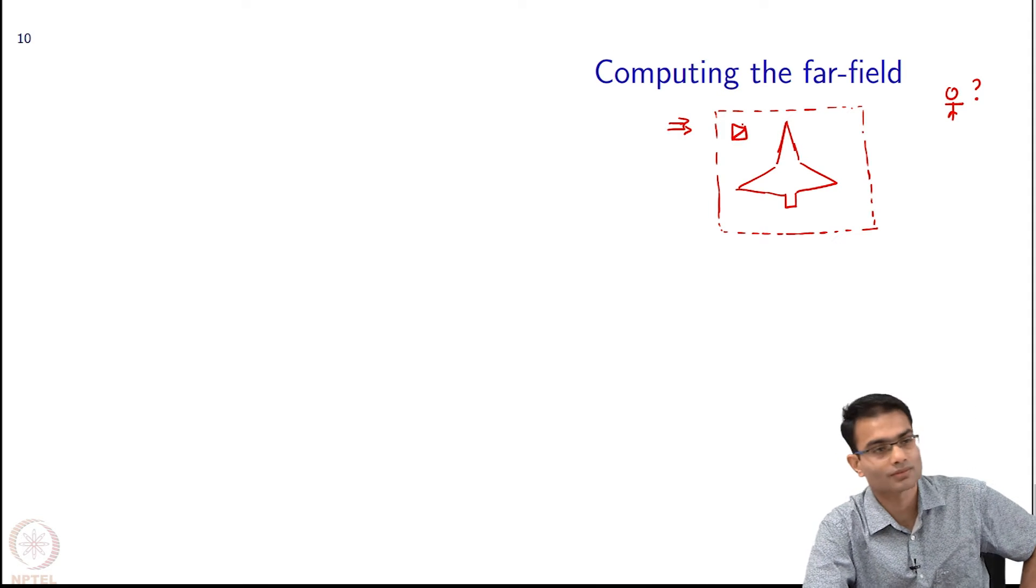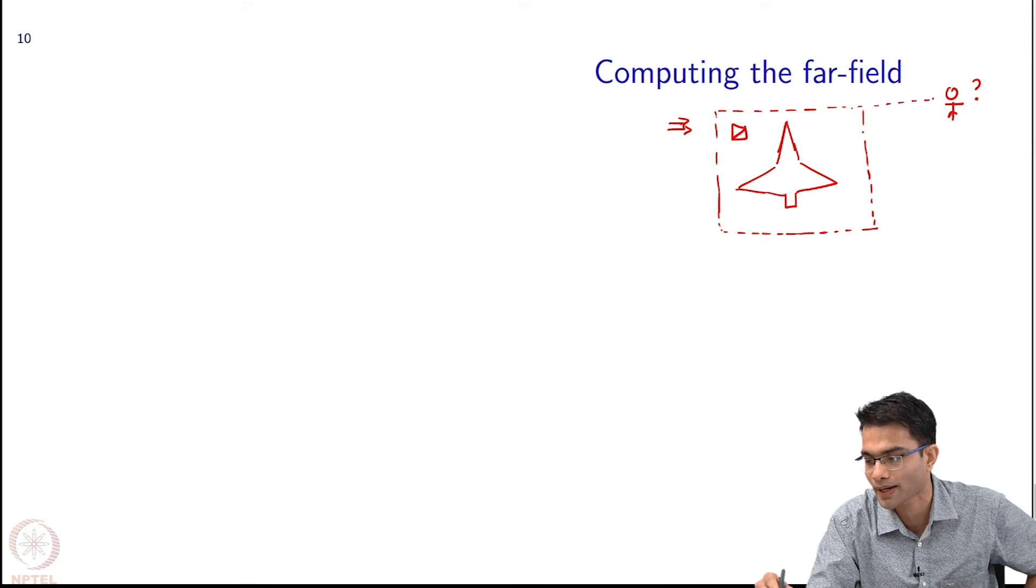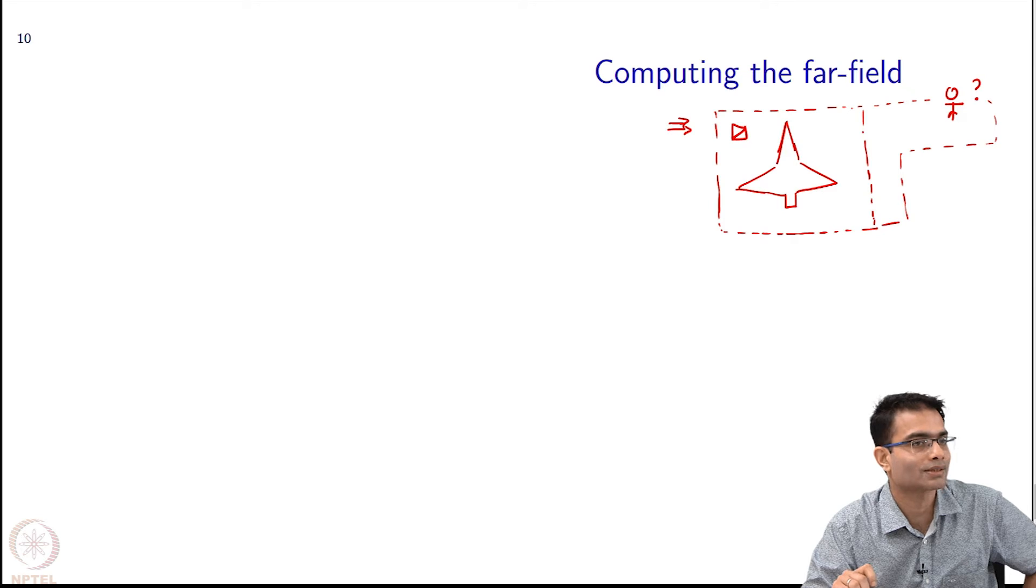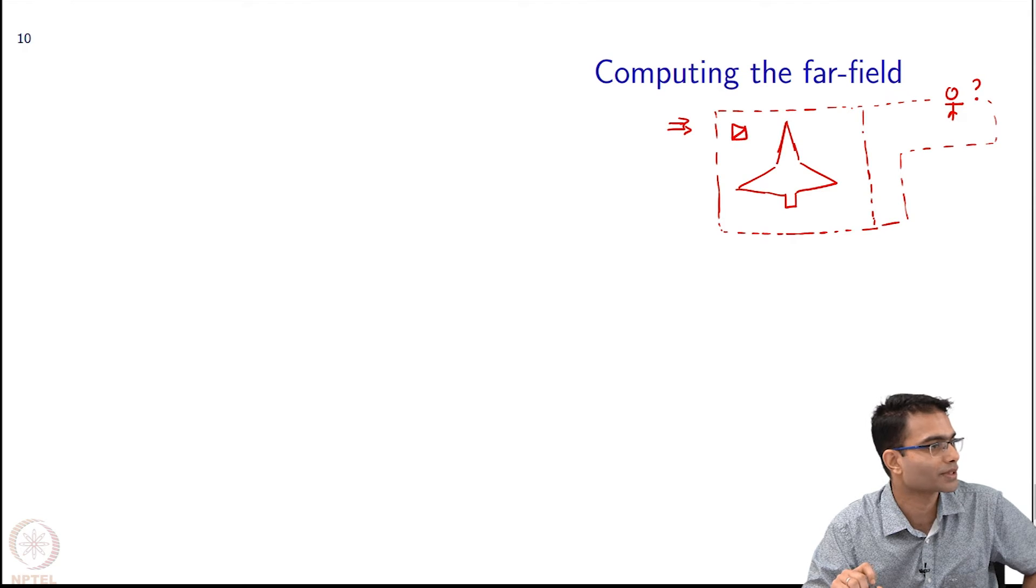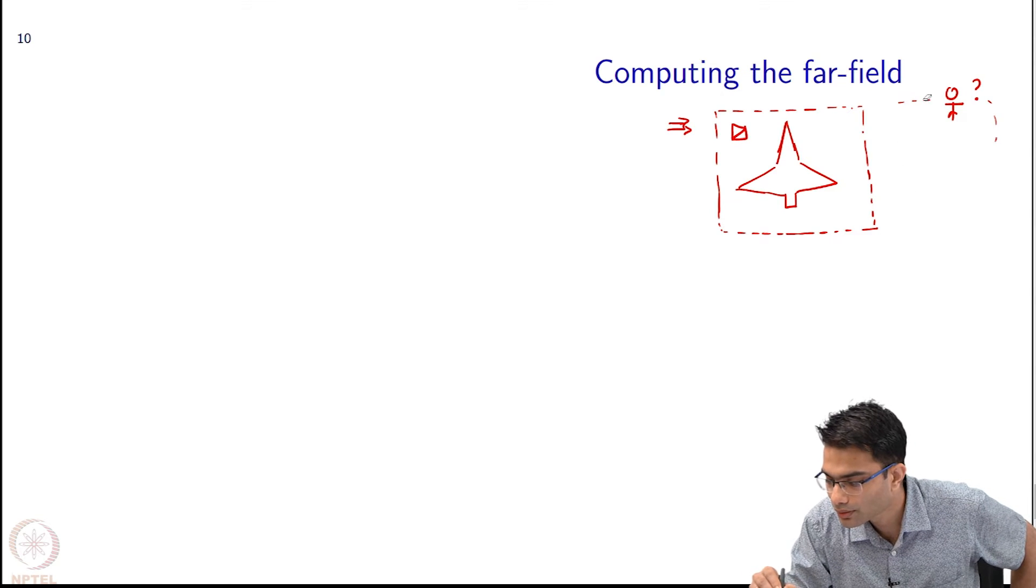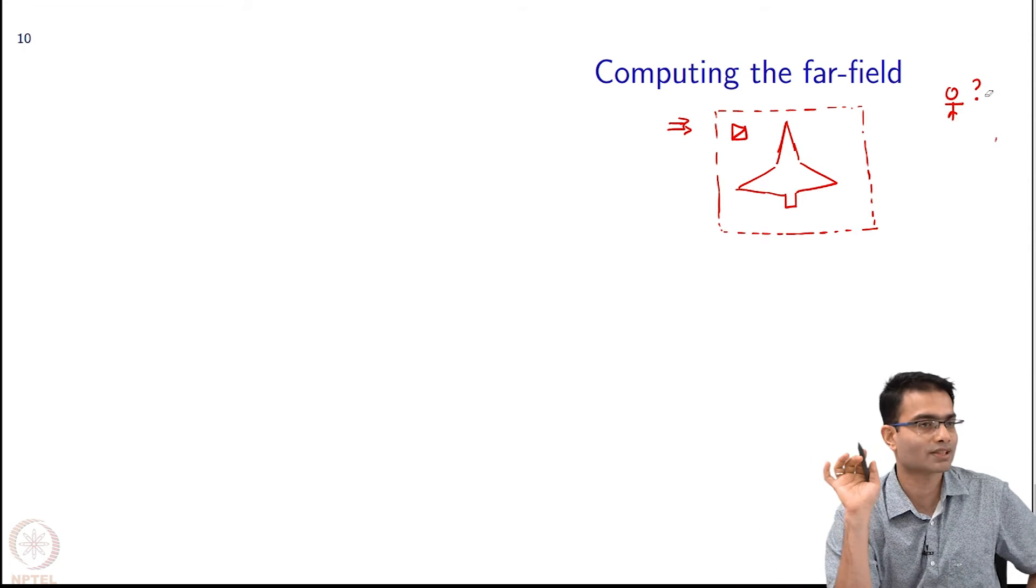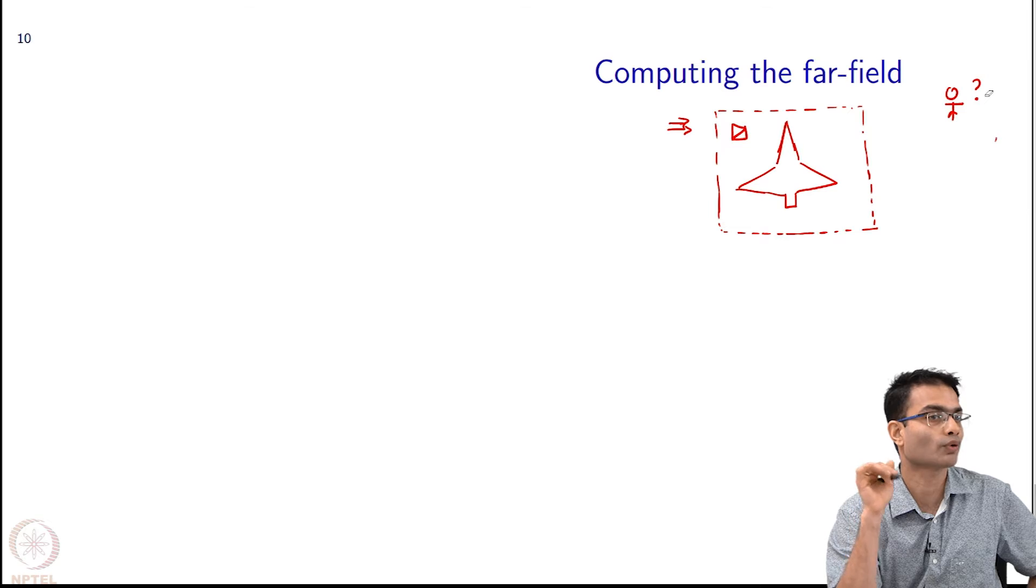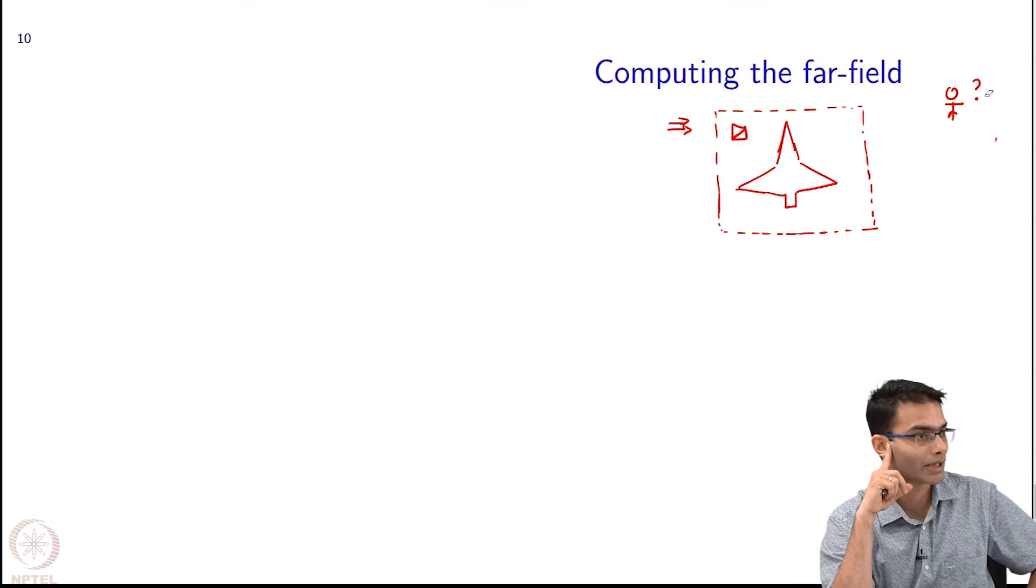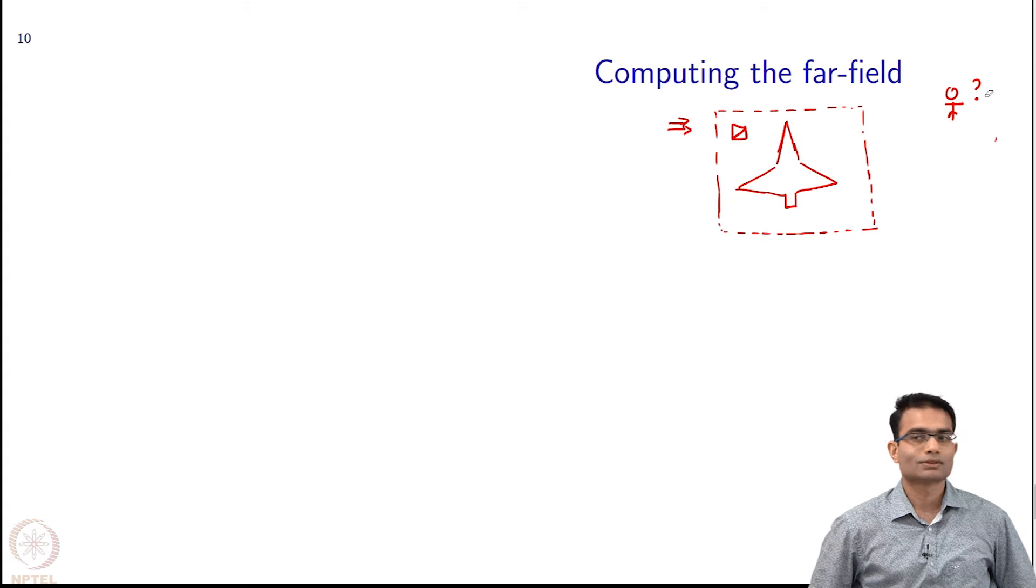So one thing that is being suggested is that well if you want the field somewhere far away somehow I have to expand this domain to include this fellow that is a what is called a brute force way of doing it. Is there a smarter way of doing it? Brute force way is one way supposing I want to find out the radar cross section. That means my observer is where infinity can I possibly mesh so much you know.